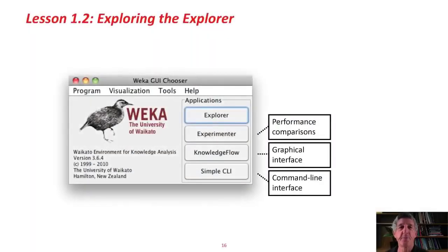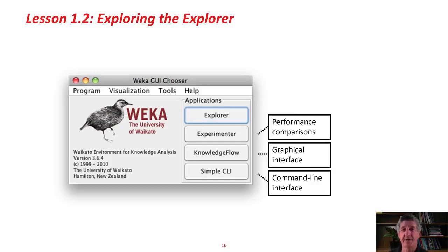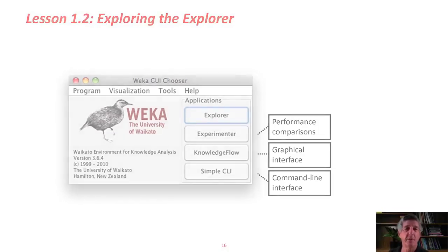Back to the slide. There are four interfaces in Weka: the Explorer — that's the one we're going to be using throughout this course. There's also the Experimenter for large-scale performance comparisons for different machine learning methods on different datasets. There's a Knowledge Flow interface, which is a graphical interface to Weka tools. There's a command-line interface. But we're just going to use the Explorer.